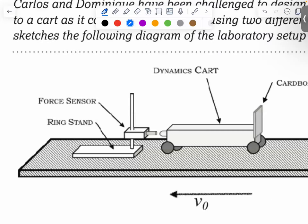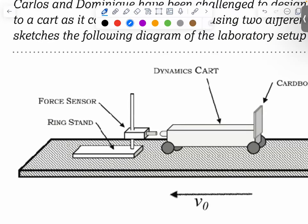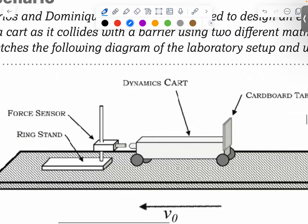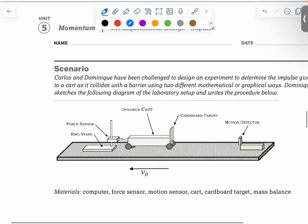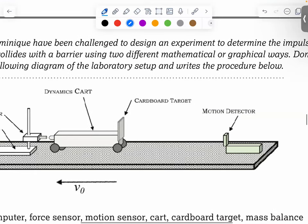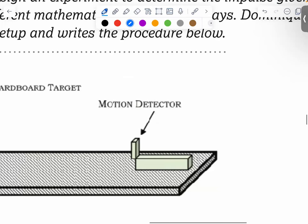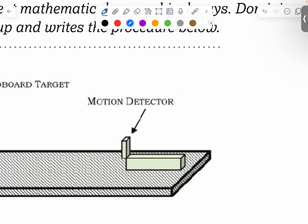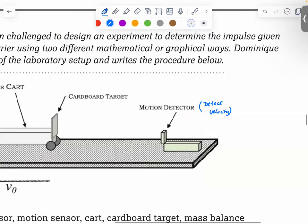This question is a bit different, and I'm not a big fan of this type of question because you don't really get taught this way. Here we have a few pieces of equipment: a ring stand, a force sensor which senses the force being applied to it, cards that move, a cardboard target, and a motion detector. The function of a motion detector is to detect velocity.